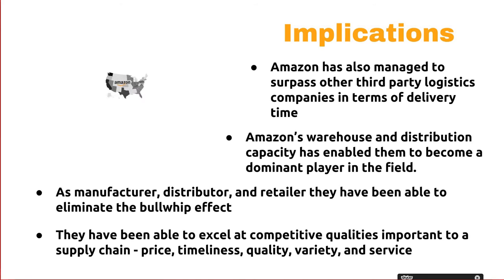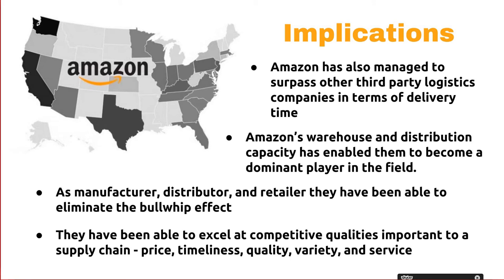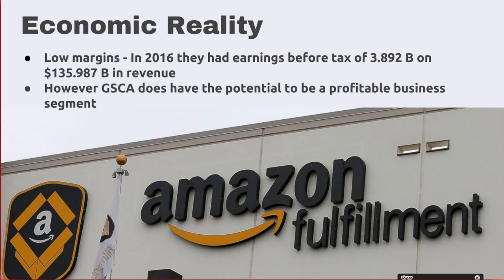So, what are the implications of all these moves? Their directives in the air, on the ground, and at sea have shown that they are committed to meeting and exceeding the needs of their users. By eliminating the supplier-retailer ordering system relationship, Amazon has also managed to surpass other third-party logistic companies in terms of delivery time, a distinct competitive advantage. Amazon has accomplished much of its initial success in the area because of their distribution and warehouse spread and capacity. As a manufacturer, distributor, and retailer, the company has also been able to avoid the Bullwhip effect, a phenomenon whereby order variability gets progressively larger the further up the supply chain the company is. Throughout their development, they've been able to excel when it comes to the competitive qualities important to a supply chain: price, timeliness, quality, variety, and service. I'm going to pass it over to Ryan, who's going to talk about the economic realities.